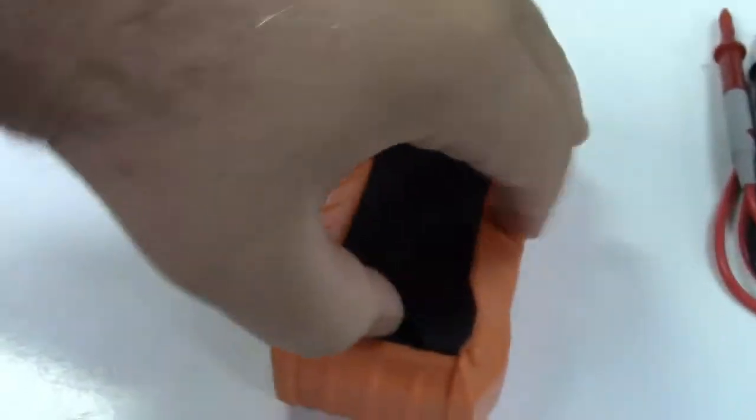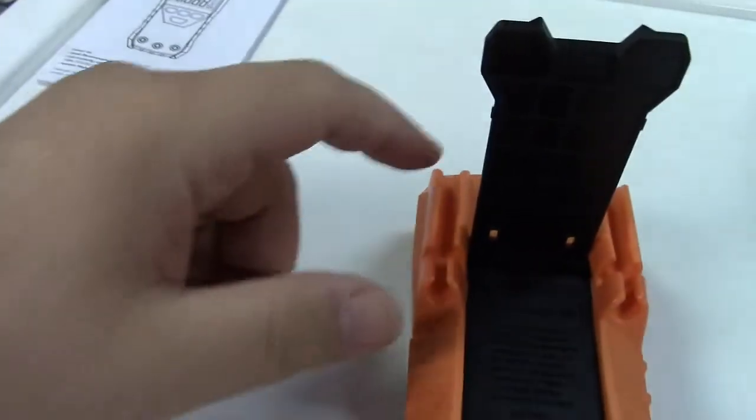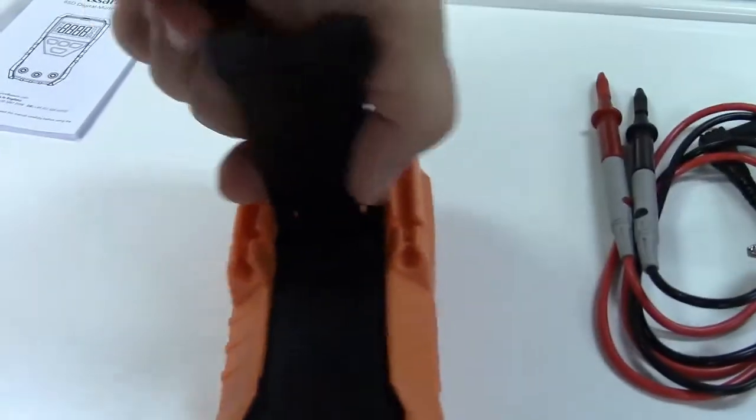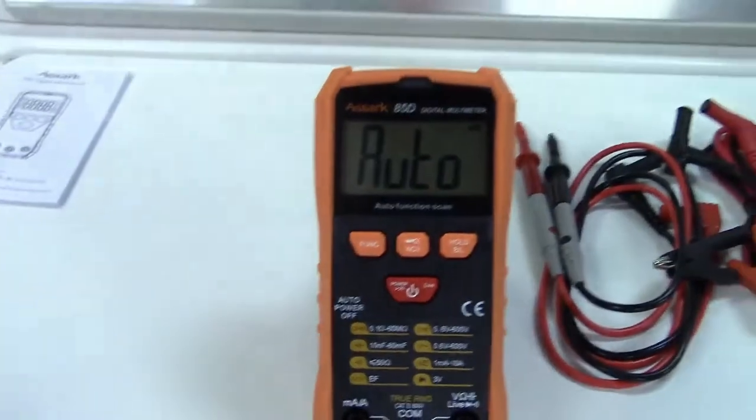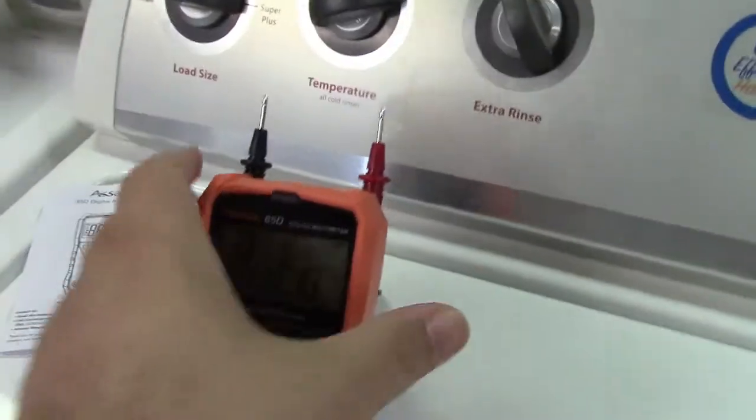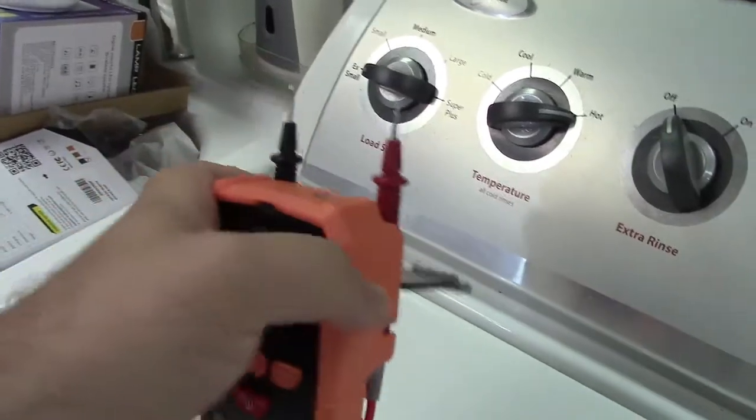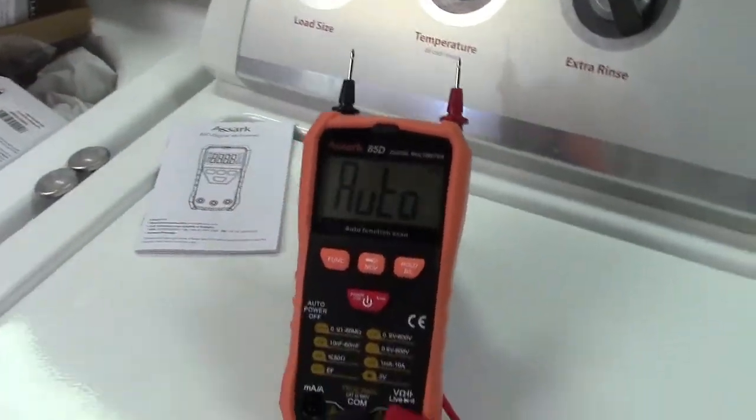The back of it has a stand that pops out like that. And before I flip it back, lead holders. So you can put the leads in there. I'll show you that in a minute. So it can stand up just like that. And as you can see, the leads fit right in like that. So it can hold the leads for you very simply right there.